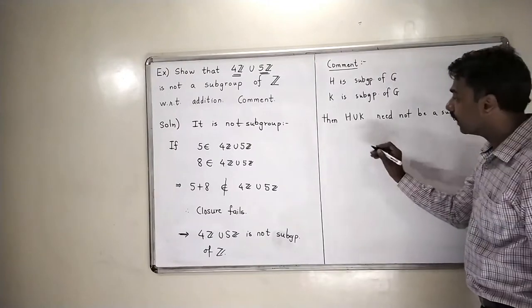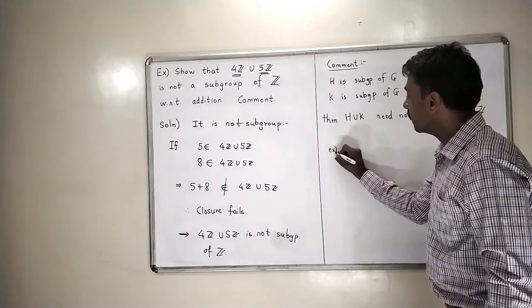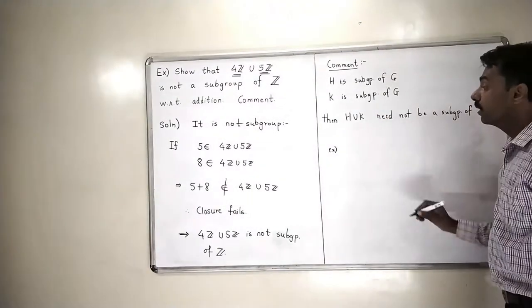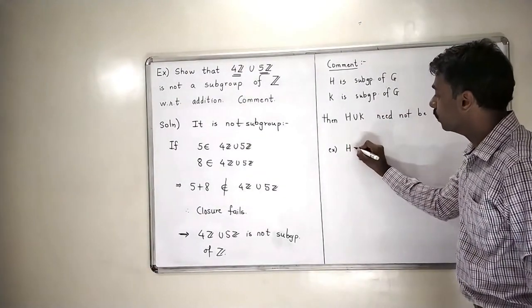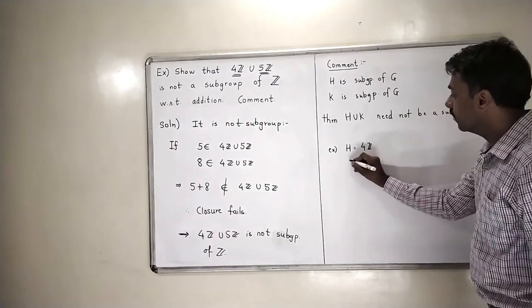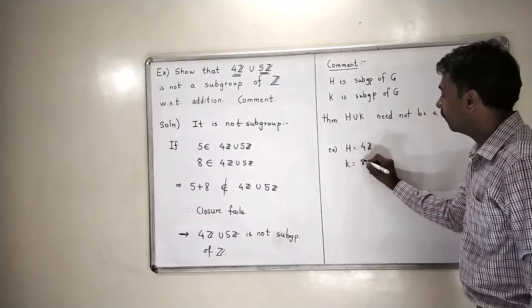Now, we will now take an example in which H is a subgroup, K is a subgroup and H union K is also a subgroup. That example is very easy. You take H is equal to again 4Z and you take K is equal to 8Z.